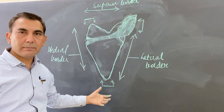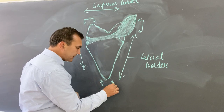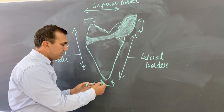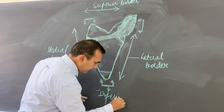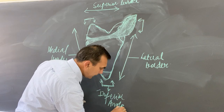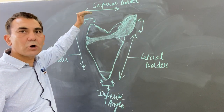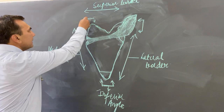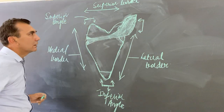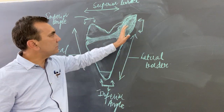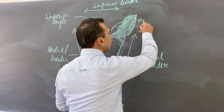We will now learn about the angles of the scapula. The scapula has three angles. The angle which is present on the lower side of the scapula is called the inferior angle. The second angle, which is on the top, on the superior side towards the head, is called the superior angle. The third angle, which is towards the lateral side away from the mid-plane, is called the lateral angle.